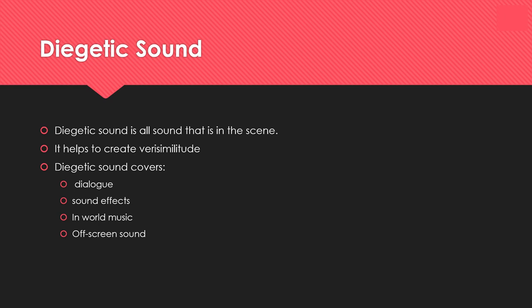Another method you could use with mise-en-scene elements to try and make something believable is sound. Diegetic sound is all sound that is in the scene — what is actually present in that scene. It's not something added in afterwards; it's what was originally there when you pressed record. This includes dialogue, any sound effects occurring during the scene, any in-world music such as a radio playing, and any off-screen sound going on in the background.